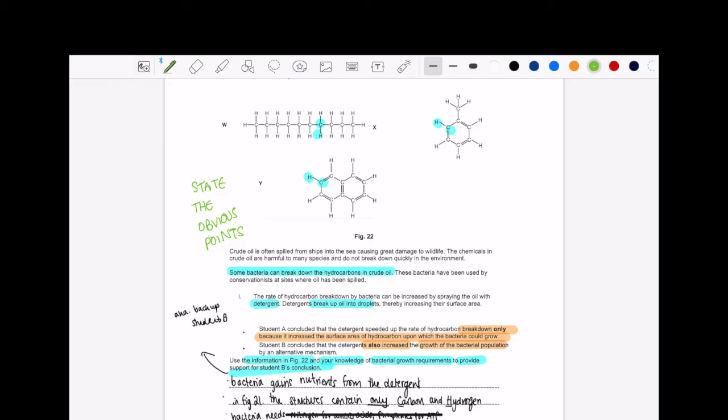Student A, what do they say? They said their detergent speeded up the rate of hydrocarbon breakdown only because it increased the surface area. Student B said that, yeah, it also increased the growth of the bacteria population by an alternative mechanism. So the question is telling me and you back up student B conclusion that, you know, this detergent actually helped the bacterial population grow. And the reason why I've taken my time to try and understand what's going on and rephrase it in my head is because this question, as I said, there's so much going on, right? So you don't want to just dive into it.